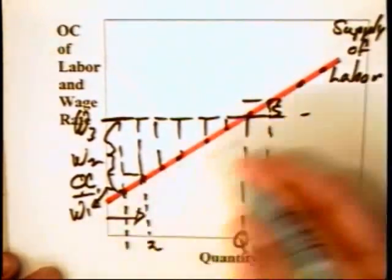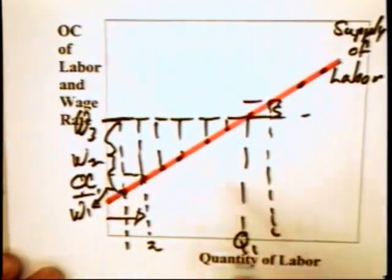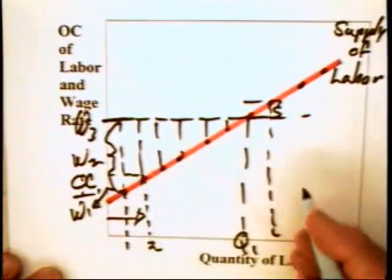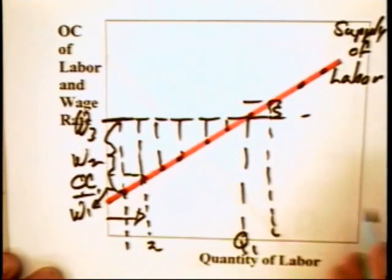So the moral story is, supply curves are upward sloping because of the presumption of increasing opportunity cost as more and more labor is brought into the market.